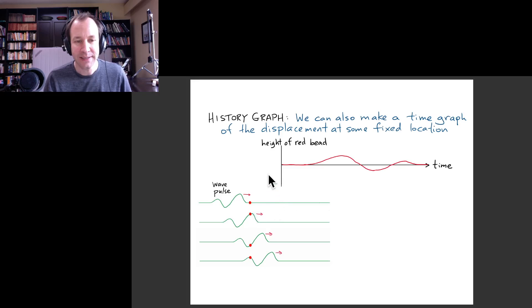In this case, the time graph might look something like the one that I've drawn above. The reason is that we imagine at first the bead is just sitting there at the equilibrium position.